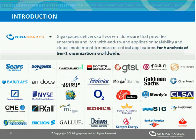What GigaSpaces has been doing for the last 10 years is delivering best-in-class elastic application platforms that provide enterprises and ISVs with end-to-end scalability and fast enablement designed for mission-critical applications. As of today, hundreds of large-scale organizations around the world run their mission-critical applications on top of GigaSpaces middleware, among which are Dow Jones, Morgan Stanley, Bank of America, Goldman Sachs, Sears, Reuters, Bloomberg, Kohl's, and many others spanning financial services, e-commerce, telco, healthcare, and e-gaming.